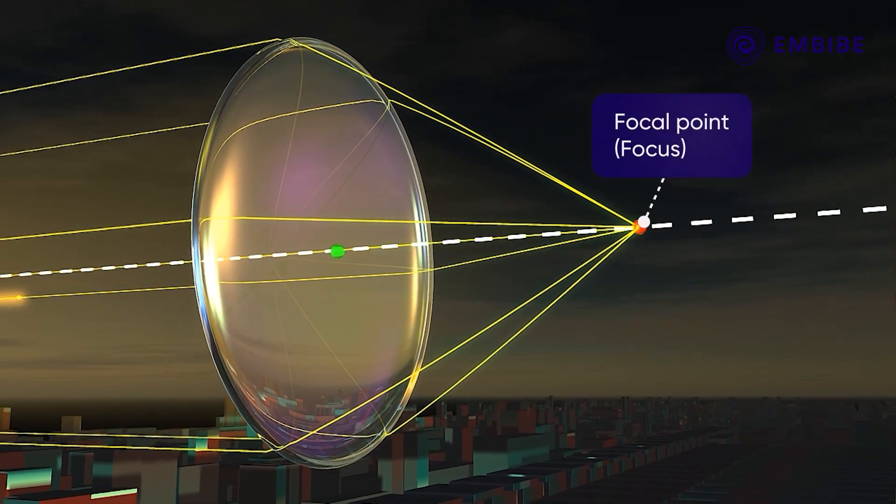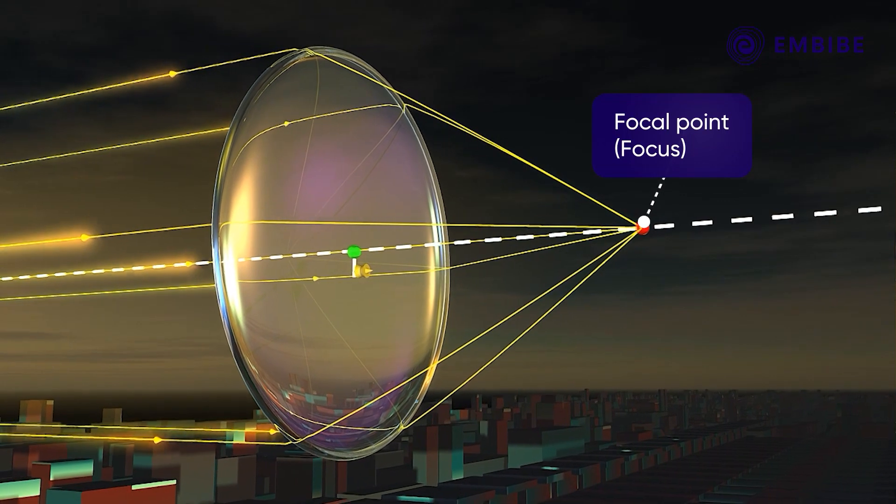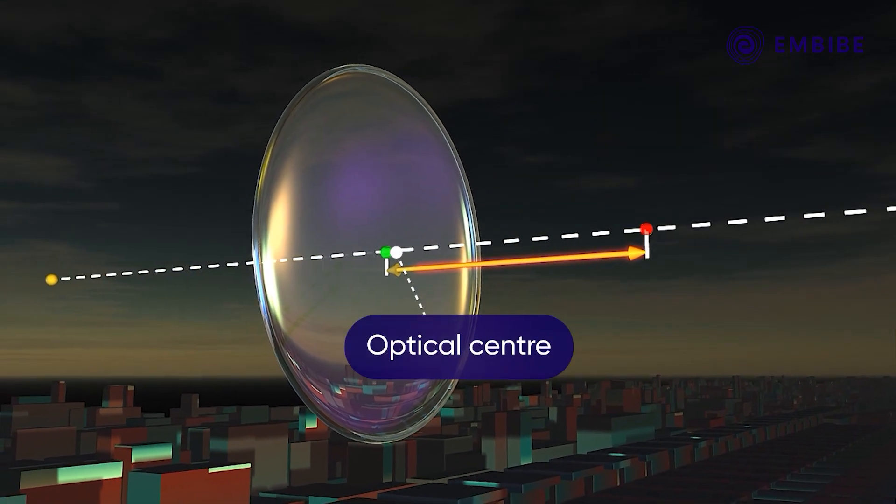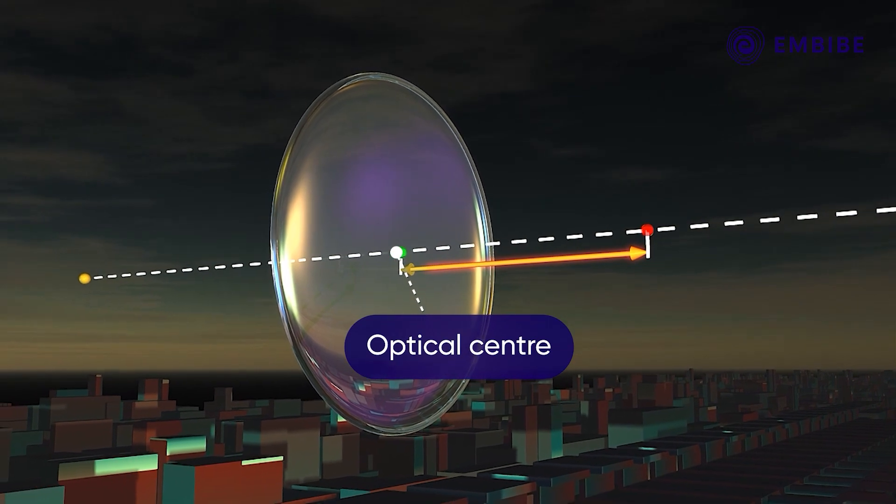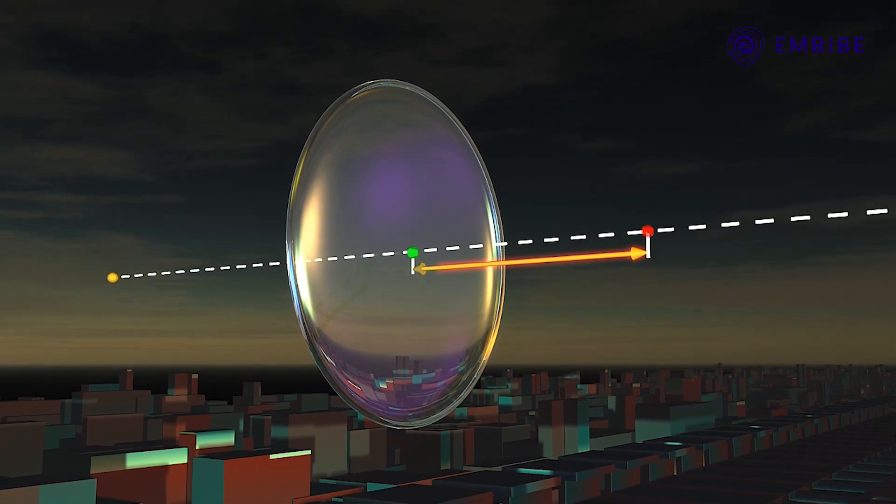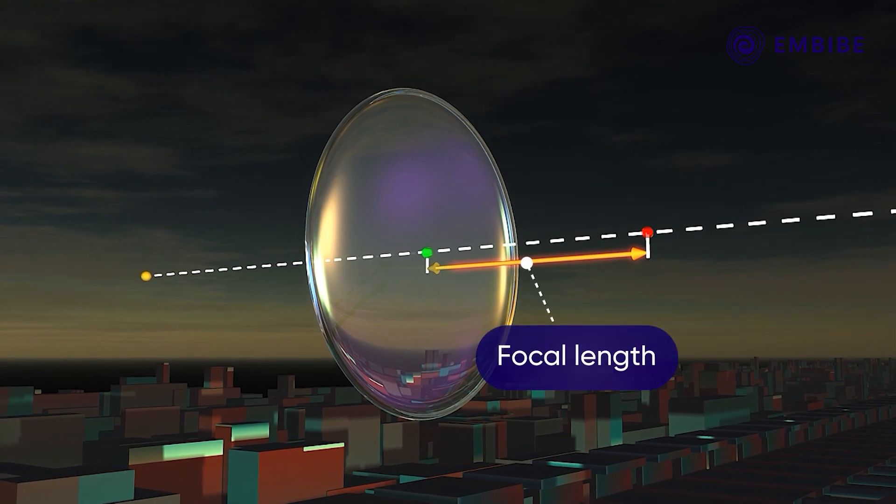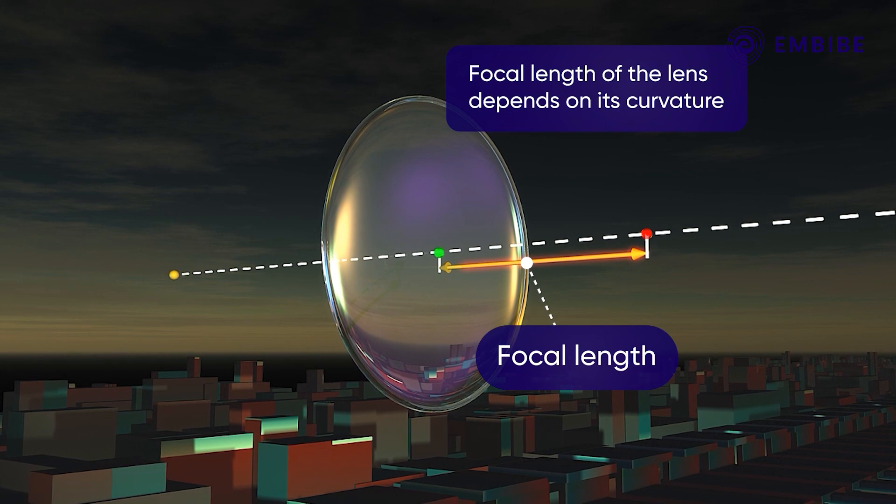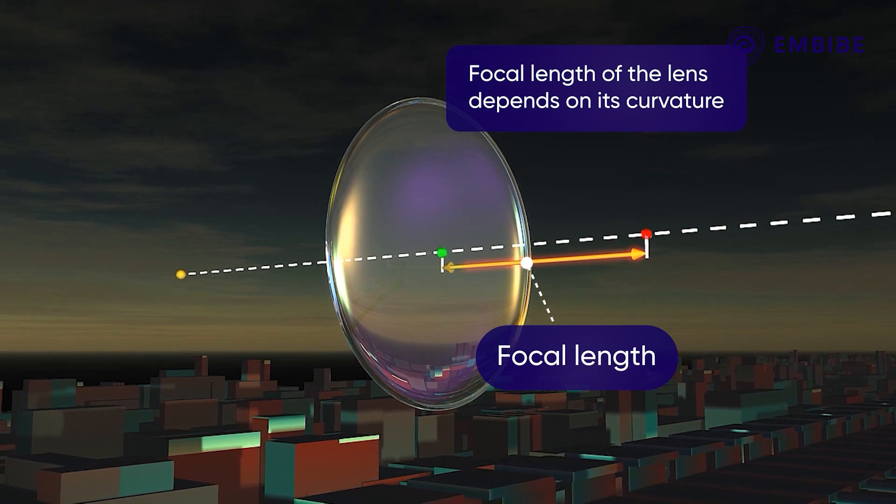This point is called the focal point or focus of the lens. The distance from the optical center of the lens to the focal point is called the focal length of the lens. The focal length of the lens depends on its curvature.